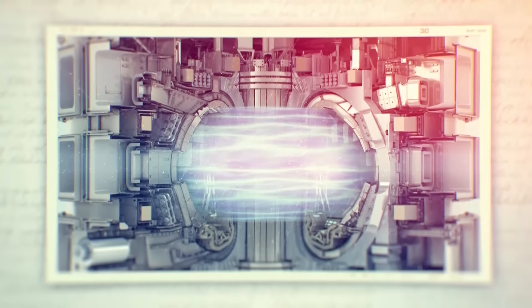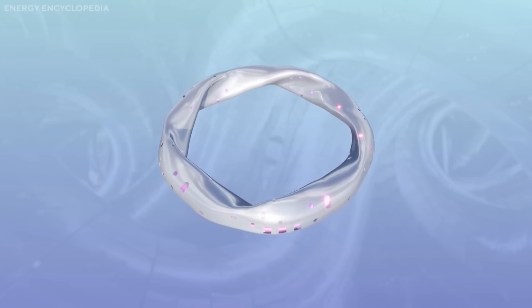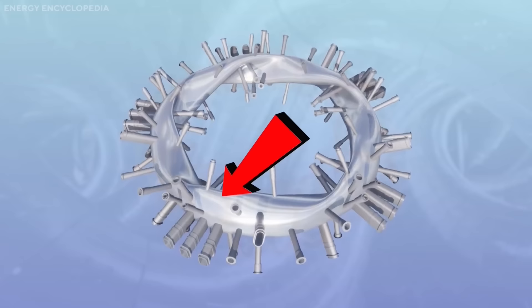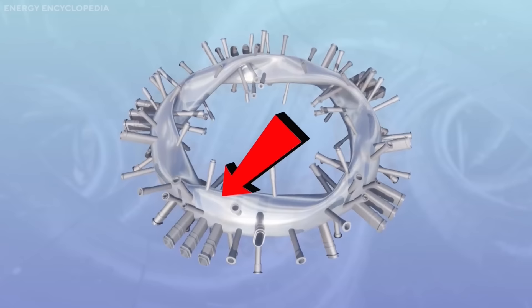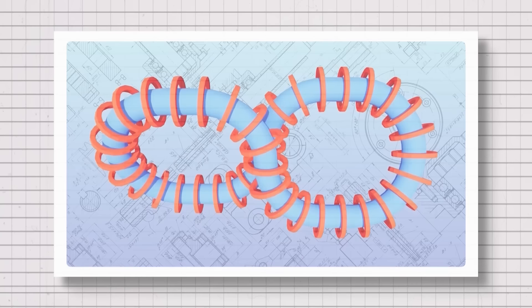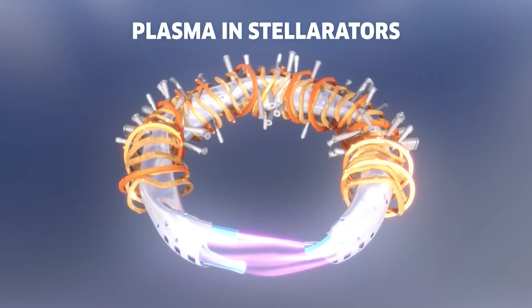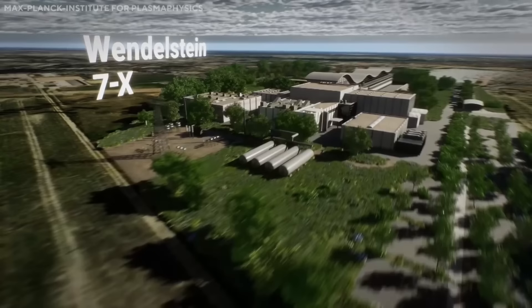Another promising design for magnetic confinement is the stellarator. A stellarator is similar to a tokamak, but it has a more complex shape and does not rely on a plasma current to generate the magnetic field. Instead, it uses a set of twisted coils that are carefully designed to produce the optimal field configuration. The advantage of a stellarator is that it can operate in a steady state, without the risk of plasma disruptions that can occur in a tokamak due to instabilities in the current.